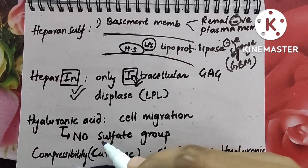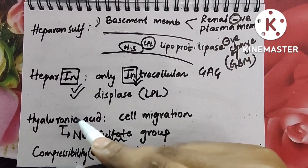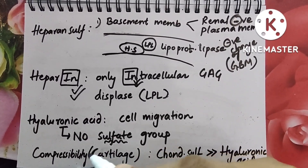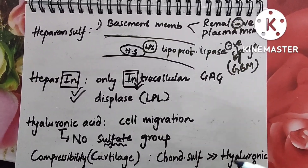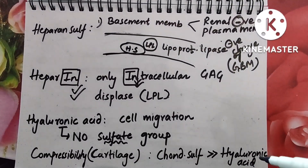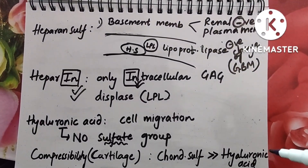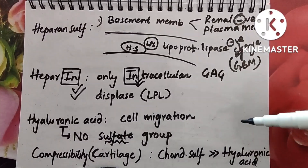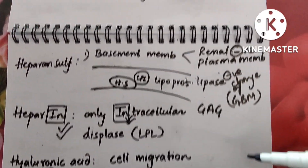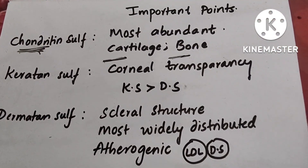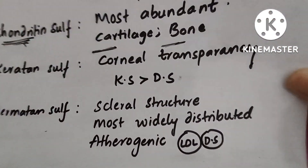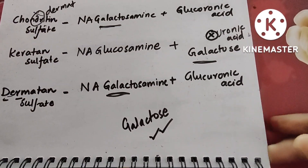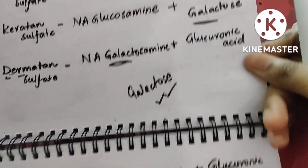Coming to hyaluronic acid: there is no sulfate group in its spelling, so it has no sulfate group. It is responsible for cell migration and cartilage compressibility. For cartilage compressibility, chondroitin sulfate contributes more than hyaluronic acid. This covers all the important points of GAGs that you need to know.